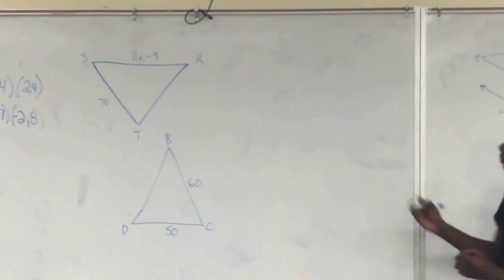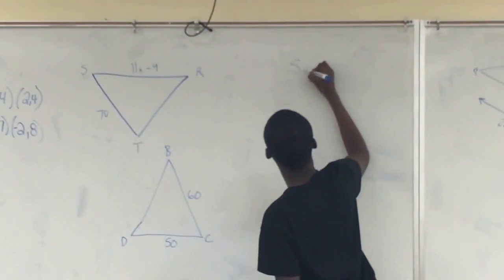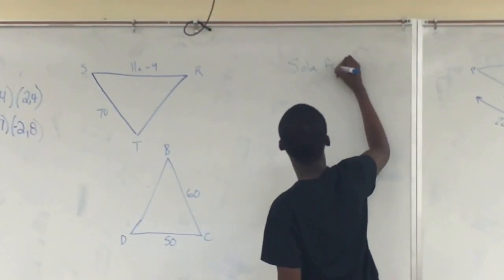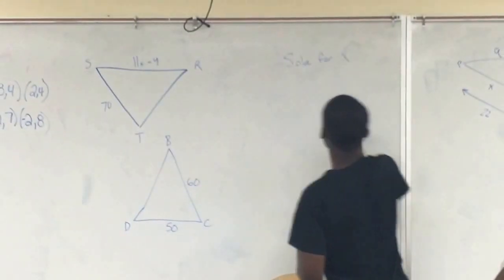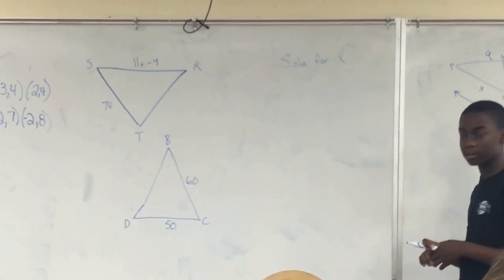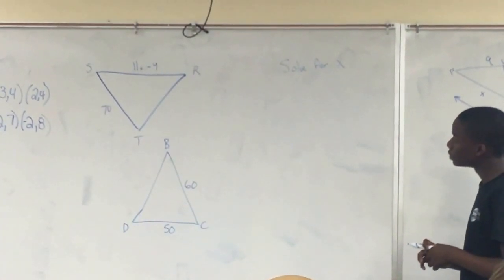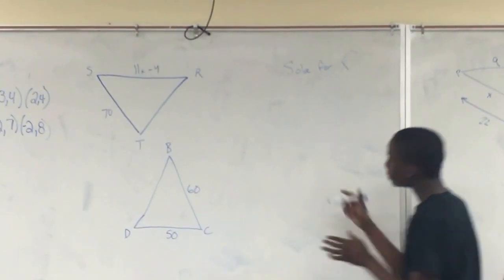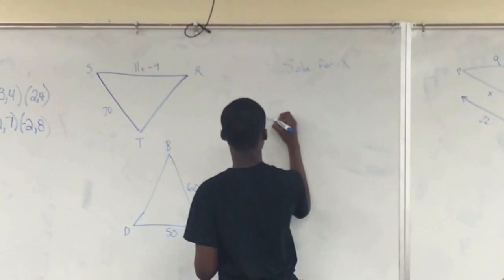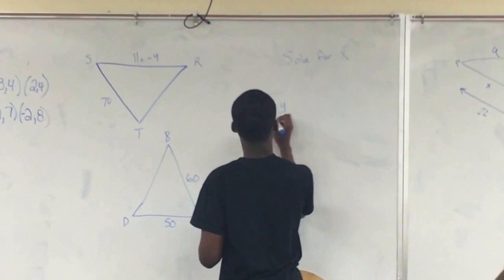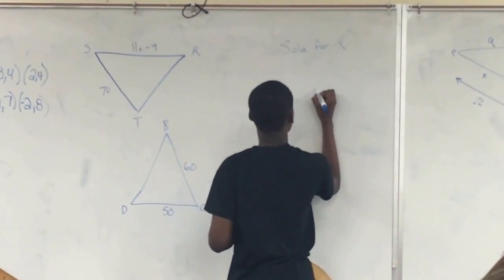Today we're going to be looking at two triangles and solving for x. We're going to put each side length for the corresponding sides of both triangles into a proportion. We're going to do 11x minus 4 over 70 is equal to 60 over 50.